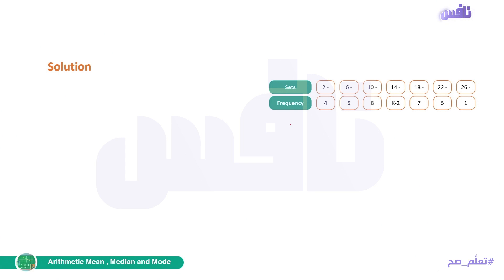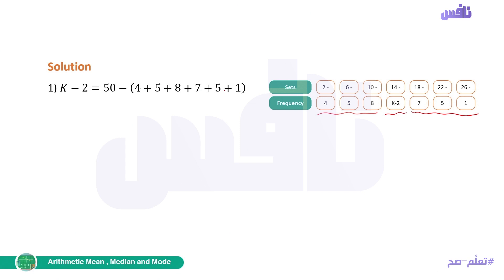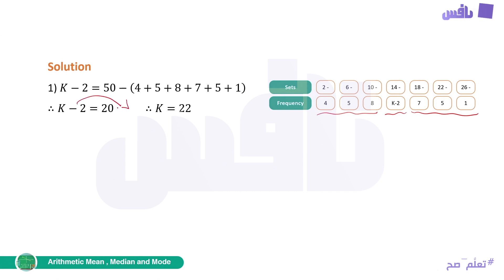To find K, we know the total of all frequencies equals 50. So K−2 = 50 minus all the other frequencies: 50 − (4 + 5 + 8 + 7 + 5 + 1) = 20. Therefore K−2 = 20, which means the number in the table is 20, not 22. An important note: the value in the table is K−2 = 20, so K = 22, but what goes in the frequency column is 20.